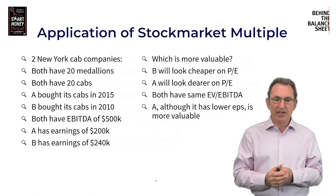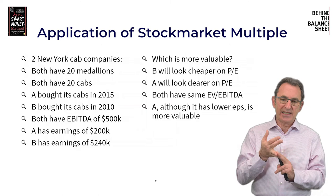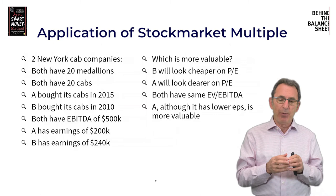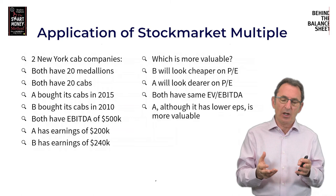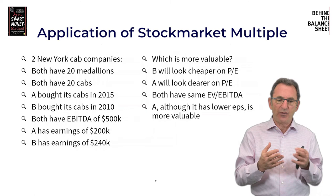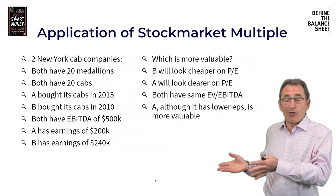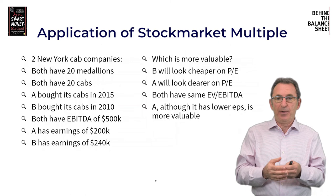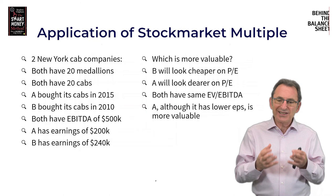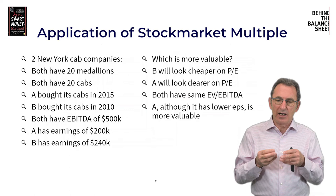Take two New York cab companies. Both have 20 medallions and 20 cabs. Company A bought its cabs in 2015; Company B bought its cabs in 2010. They both have EBITDA of $500,000. But Company A has earnings of $200,000 and Company B has earnings of $240,000. B earns more because its cabs are older and more depreciated. B looks cheaper on PE; A looks more expensive on PE. Yet both have the same EV/EBITDA.